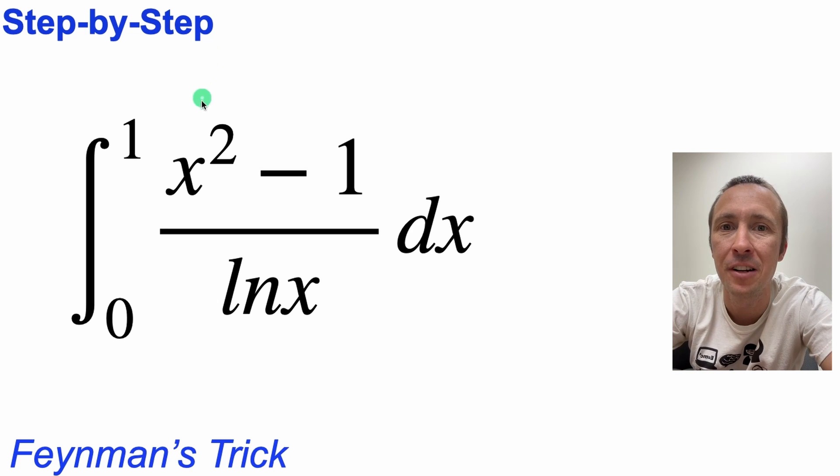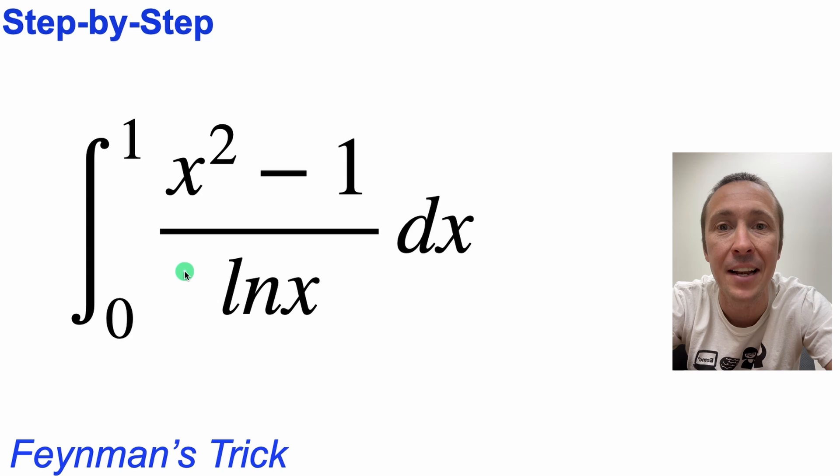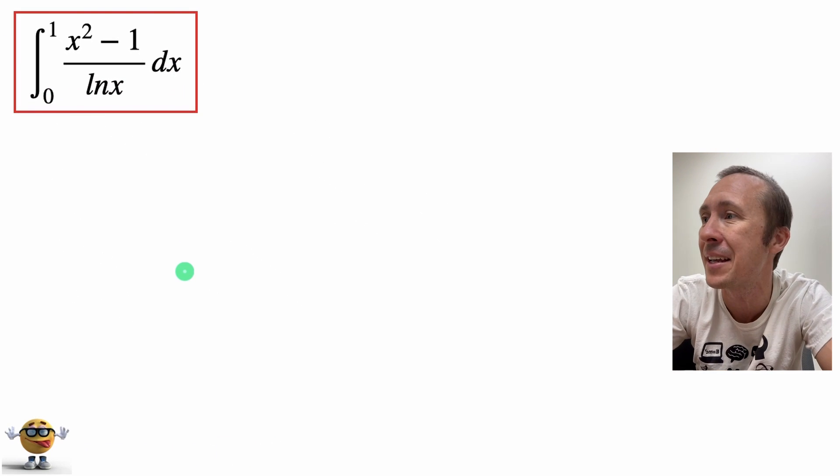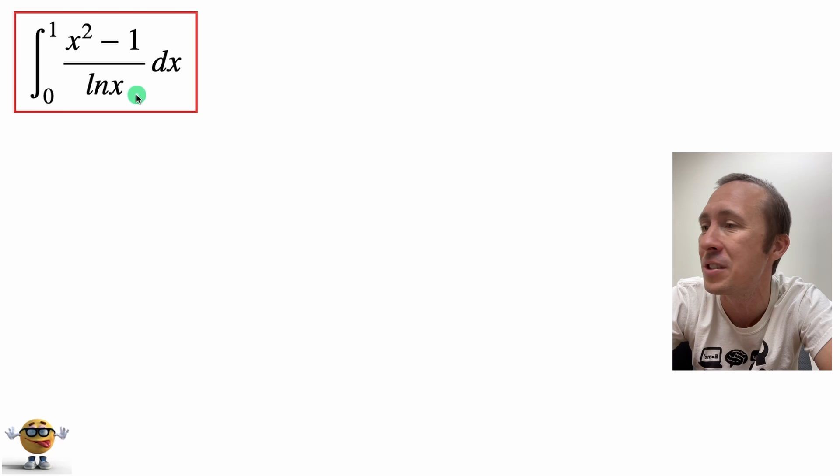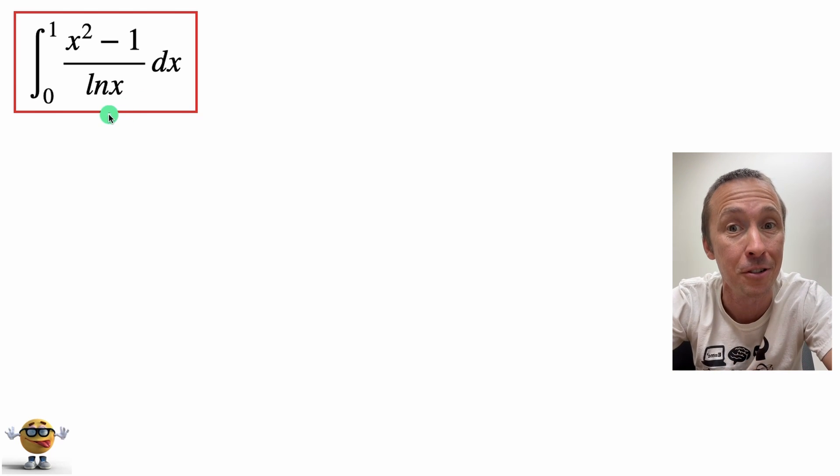What's up my friends? We're going to evaluate the integral of x squared minus 1 divided by ln x from 0 to 1, and it's going to be awesome because we're going to do it using the Feynman way or the Feynman trick. We'll use it to solve this complicated integral and you can use it to solve other complicated integrals as well.